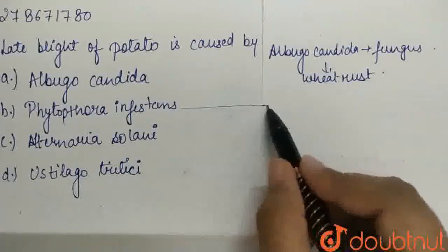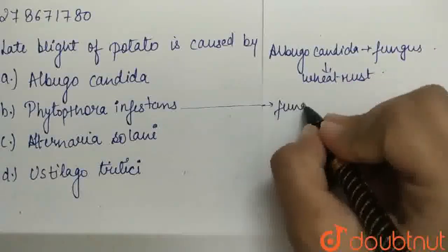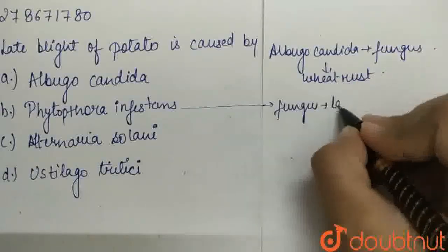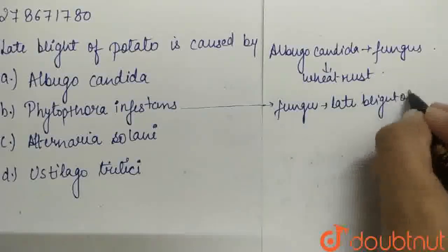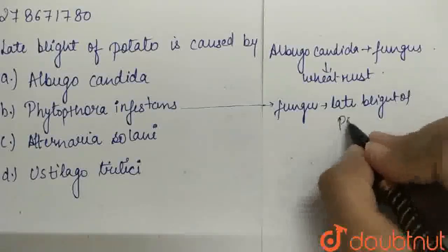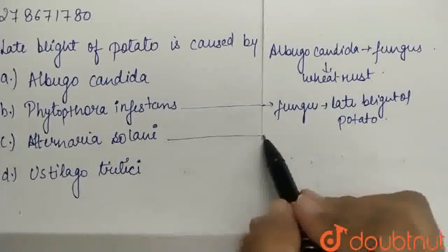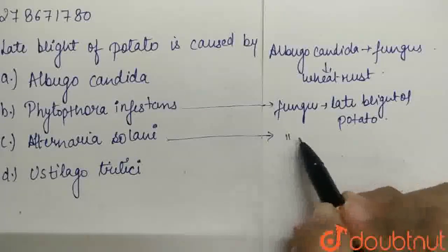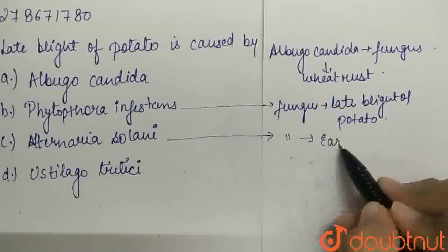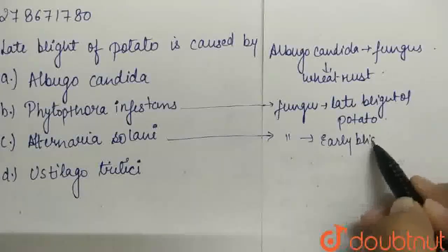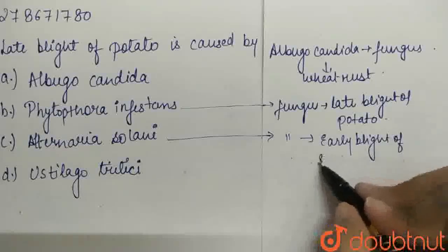Then Phytophthora Infestans — it is also a fungus which causes late blight of potato. Then Alternaria Solani is a fungus that causes early blight of Solanum species,